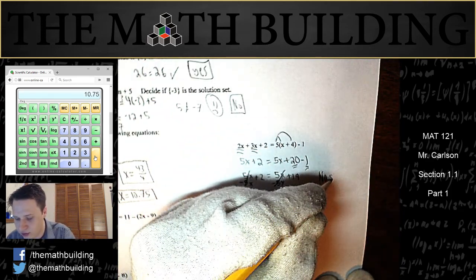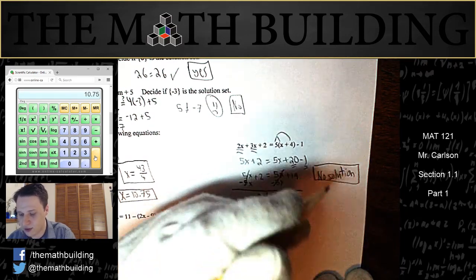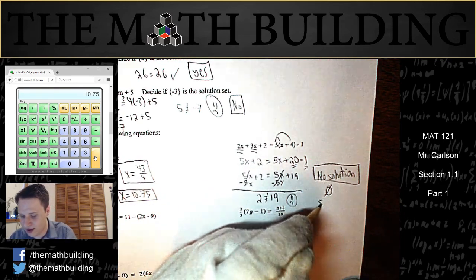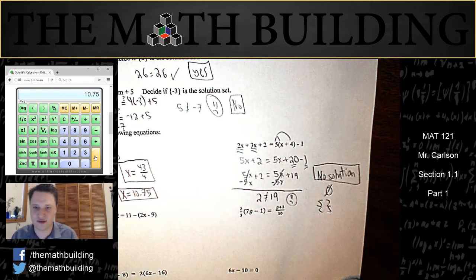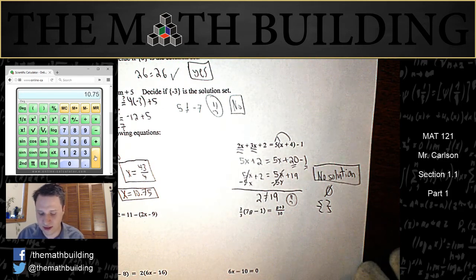If you want to write the words no solution, that's okay. I would accept that. Or if you want to be clever, you can write a 0 with a line through it to represent the empty set or two empty brackets. The solution set is the empty set. But if you just want to write no solution, that's fine for now.